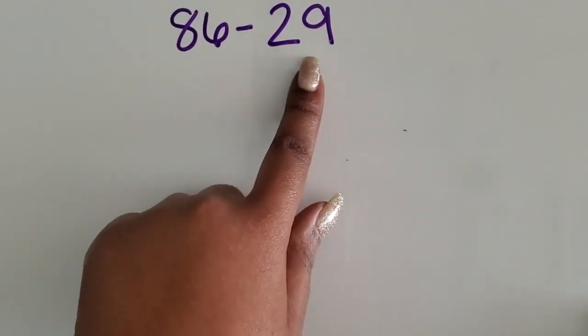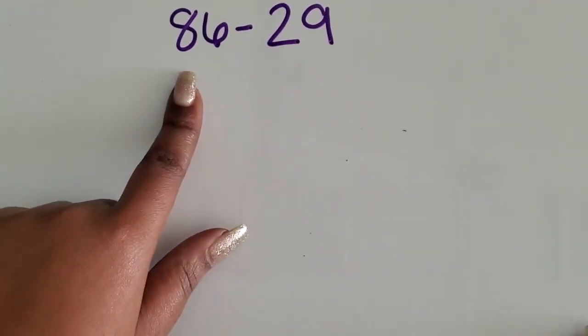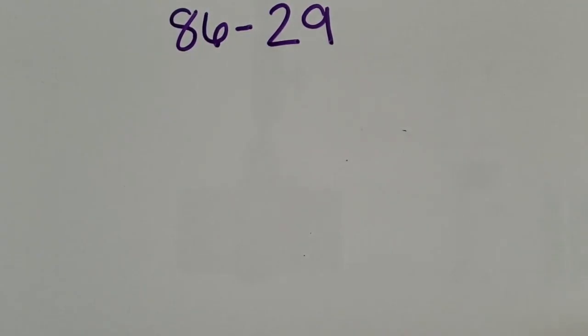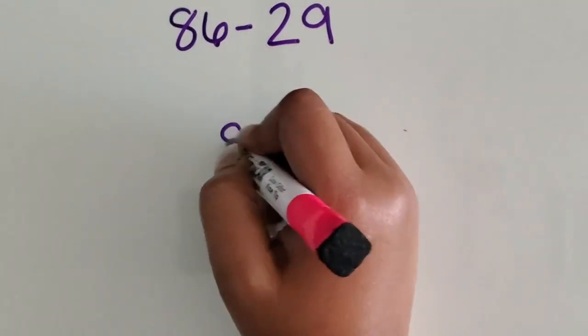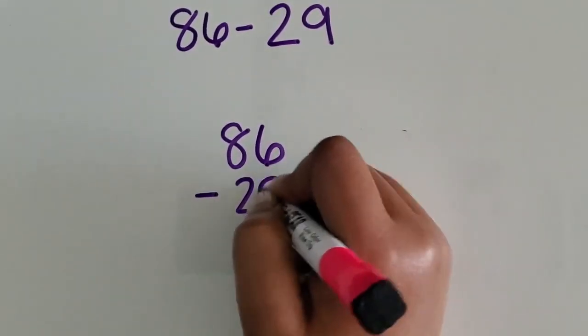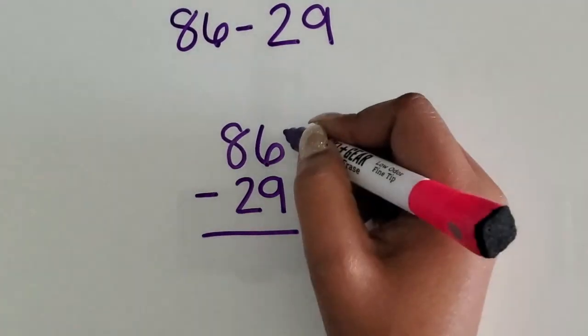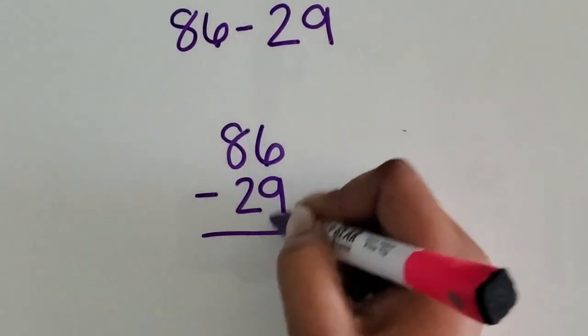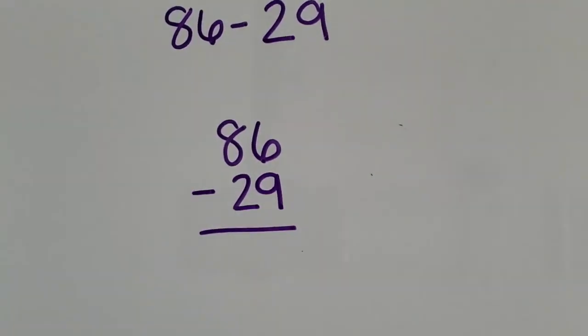We are going to subtract one two-digit number from another two-digit number using a standard algorithm, also known as the traditional algorithm. We are going to start by lining up our numbers vertically based on place value. We have both of our 1s in the 1s place and the 10s in the 10s place.